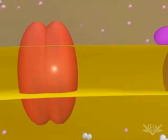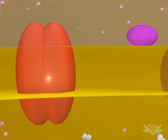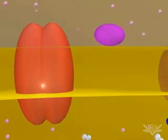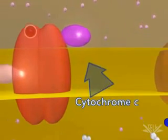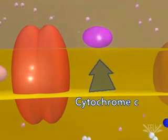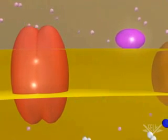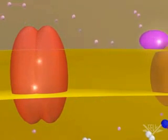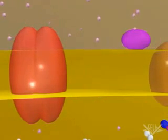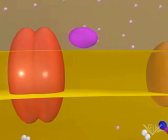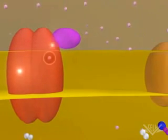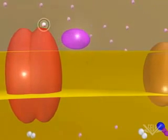Each electron is then passed from the cytochrome BC1 complex to cytochrome C. Cytochrome C accepts each electron one at a time, and one hydrogen ion is pumped through the complex as each electron is transferred.